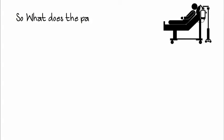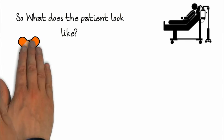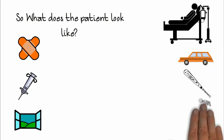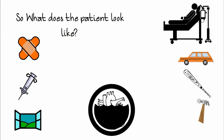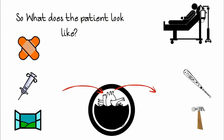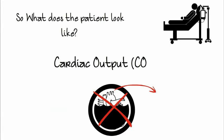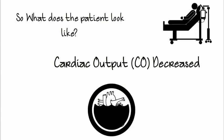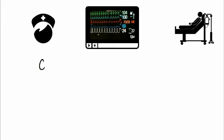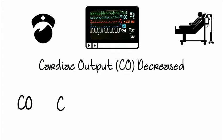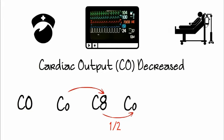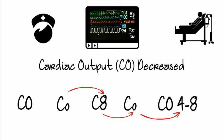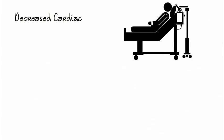So, what does the patient look like? This all depends on the cause of the tamponade, but they all result in fluid around the heart. Normally blood comes in and blood comes out, but with tamponade this doesn't happen, and the result is cardiac output gets decreased. To remember cardiac output, we start with the letters CO, put a little O on top of the other O — think of the number 8. Half of 8 is 4, so the normal cardiac output is 4 to 8. In cardiac tamponade, this is decreased — cardiac output less than 4.